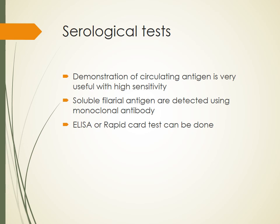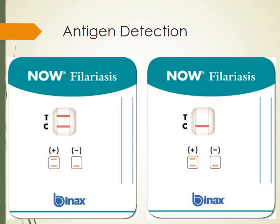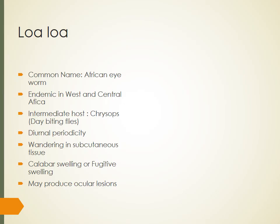Serological tests for circulating antigen detection have very high sensitivity. Soluble filarial antigens are detected using monoclonal antibodies by ELISA or rapid card tests, which are very useful even in the field. In the card test there are two bands — test band and control band. If filarial antigens are present, two bands appear; if absent, only the control band appears and the test band is blank.